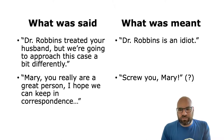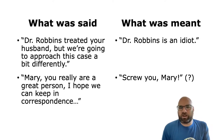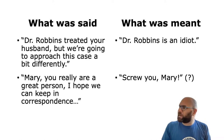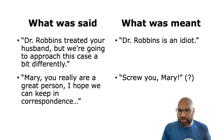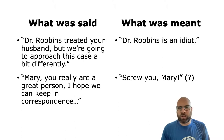Going back to Jonathan's letter, what was said was what he actually wrote: 'Mary, you really are a great person, I hope we keep in correspondence.' But what he actually meant might have been something like 'I don't want to keep in correspondence with you' — or it might have been something else. We brainstormed some other possibilities; we don't really know unless we know more context.